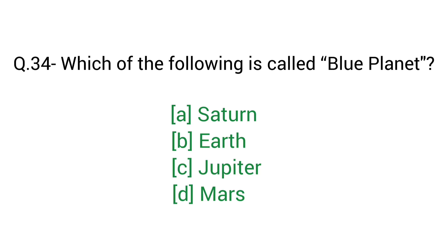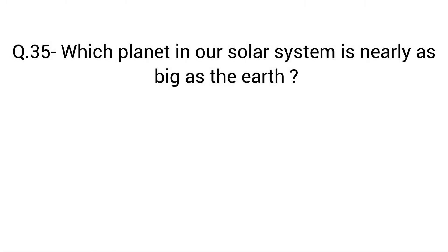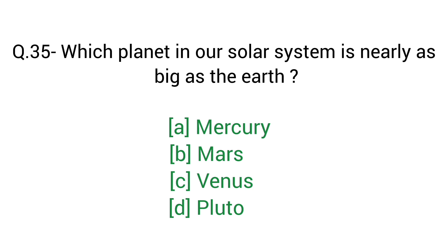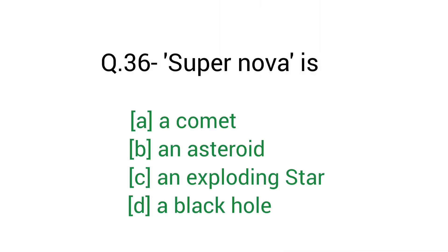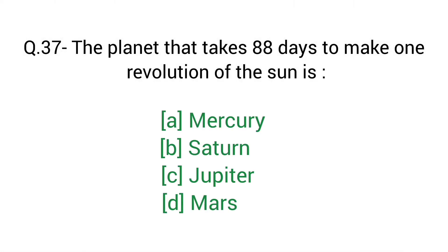Question number 34: Which of the following is called the blue planet? Right answer D — Earth. Question number 36: Supernova is? Right answer D — an exploding star. Question number 37: The planet that takes 88 days to make one revolution of the sun is? Right answer D — Mercury.